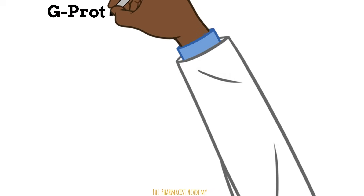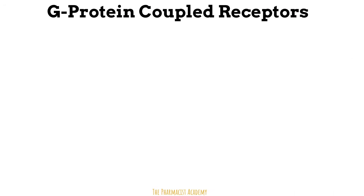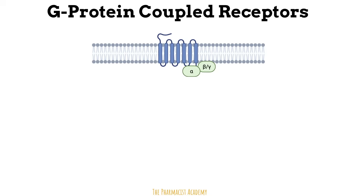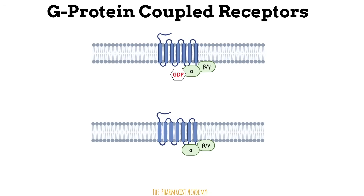Next, we have the G protein coupled receptors. G protein is a protein that contains three subunits — the alpha, the beta, and the gamma — and is bound to a transmembrane receptor. In its inactive form, the alpha unit is bound to GDP. Once a ligand or drug binds to the receptor, a conformational change occurs and GTP will replace GDP. The alpha subunit bound to the GTP molecule will then dissociate and propagate a signal cascade leading to a response.